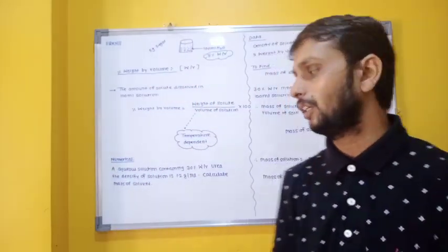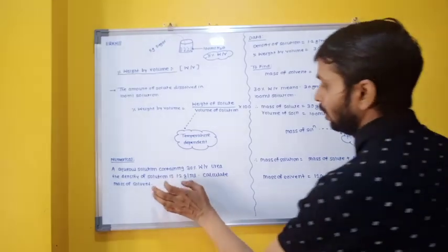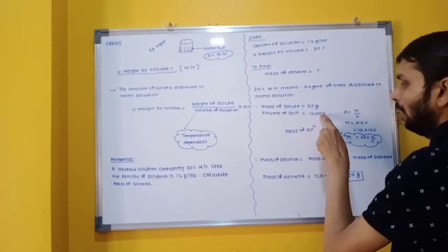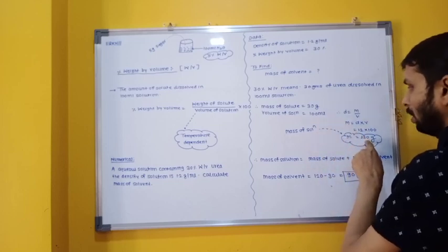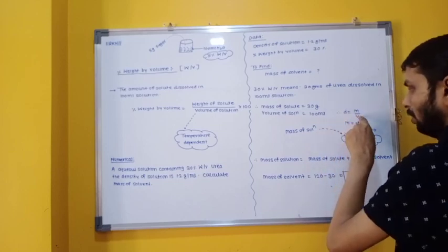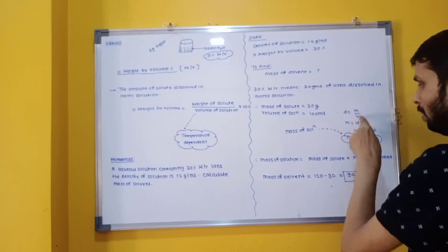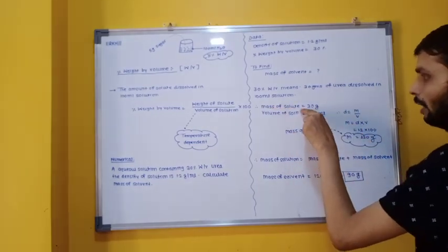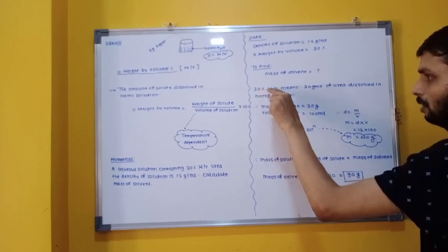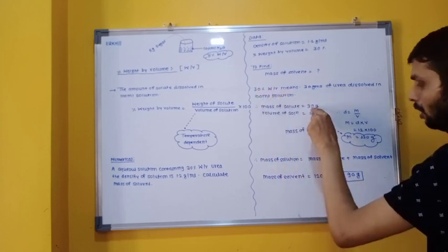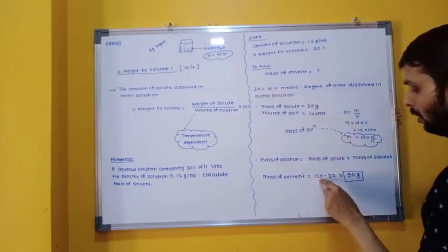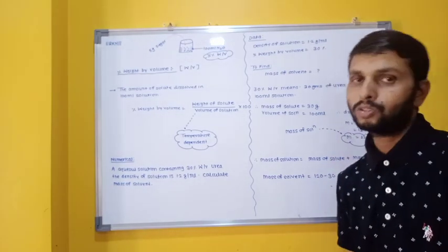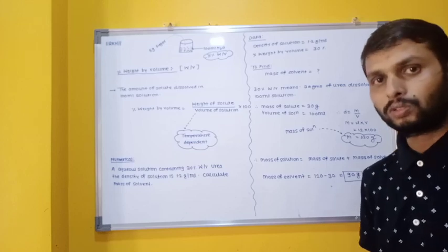The only critical point in this problem was density. The reason density was given was that the volume of solution was in ml, and to convert ml to grams we need density. Density × volume gives mass. Mass of solute from 30% W/V is 30 gram. So 120 minus 30 gives 90 gram — that is the mass of your solvent. Understood, students?